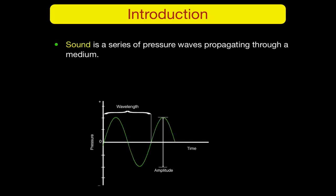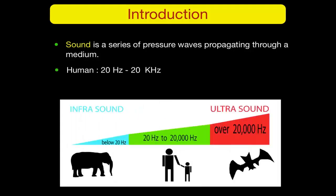Sound is a series of pressure waves transmitted through a medium, so sound needs a medium to travel through. Humans are able to hear frequencies ranging from 20 up to 20,000 cycles per second. By definition, ultrasound is any frequency above that range — anything above 20,000 cycles per second we call ultrasound.